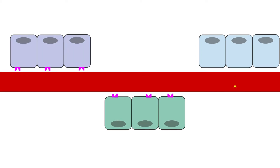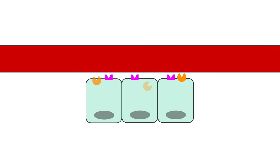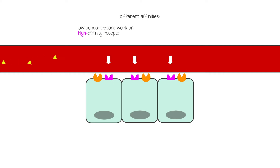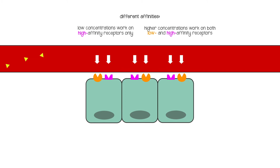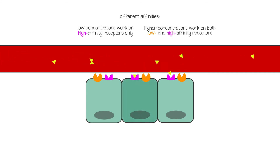There are also often several different types of receptors for the same hormone, with different affinities. Hormones might work on one type of receptor at extremely low concentrations, but at higher concentrations the same hormone might work on different receptors on the same tissue, and that might change the overall effect.